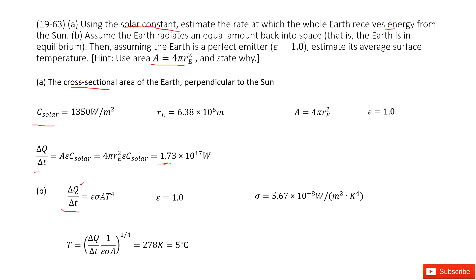So the left-hand side is given. Epsilon is given. Sigma is a constant. A is given, 4πRe². And also T. Can you find the T? Sure. So we can adjust the test from this equation. We get the function for temperature T.